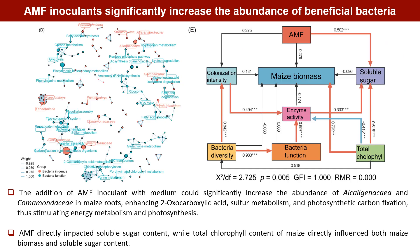Furthermore, correlation network analysis revealed a significant association between Alkaligenaceae and Comamonadaceae with biological functions including 2-oxocarboxylic acid metabolism, sulfur metabolism, and carbon fixation in photosynthetic organisms. Further analysis using a structural equation model revealed that AMF directly impacted soluble sugar content, while total chlorophyll content of maize directly influenced both maize biomass and soluble sugar content.